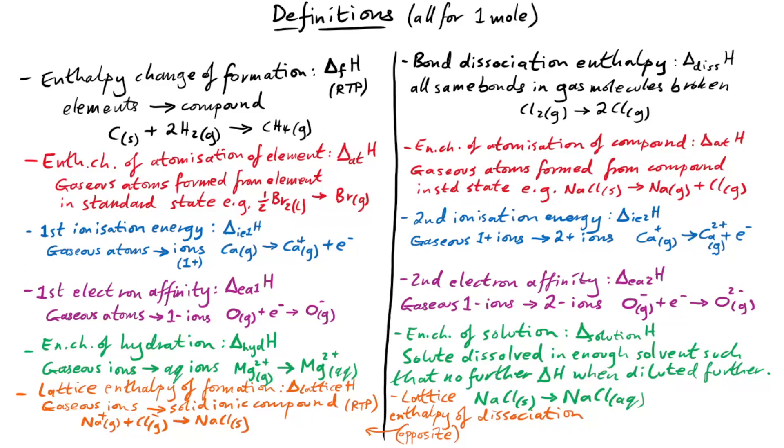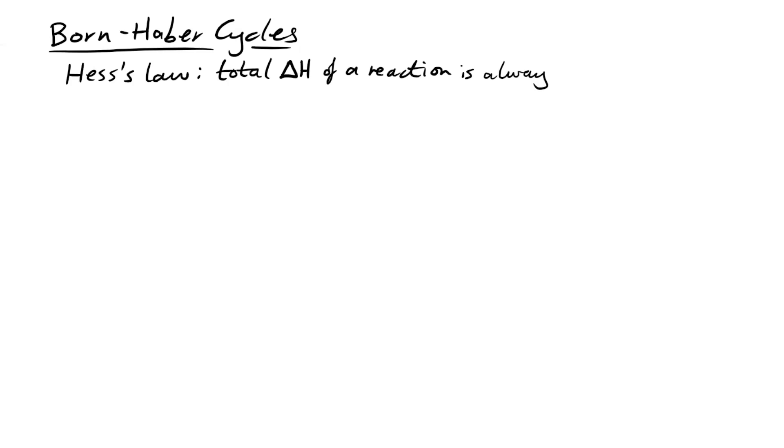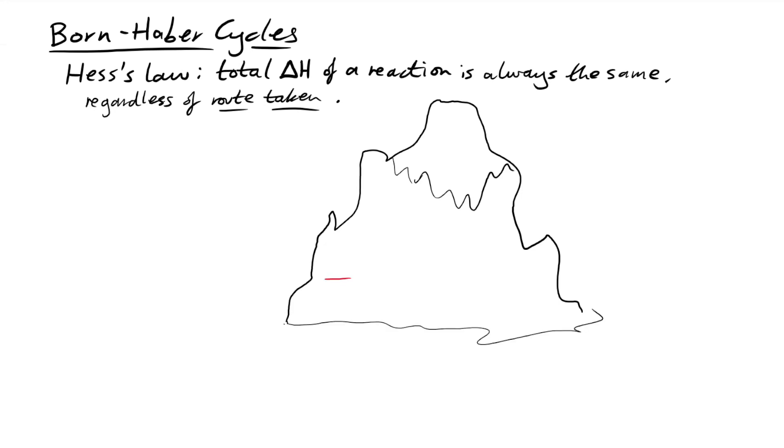So like we said, lots of these take place. Lots of these can take place in a single reaction. And we can picture that by drawing a diagram to represent a Born-Haber cycle. Now Hess's law says that the total enthalpy change of a reaction is always the same regardless of route taken. So that means that whenever we have a reaction, we know we're going to have a certain number of these things happening, but it doesn't matter in what order. We can use Born-Haber cycles to calculate lattice enthalpy change.